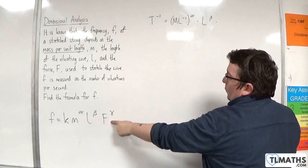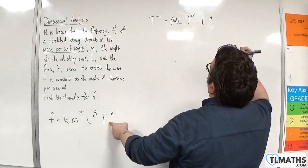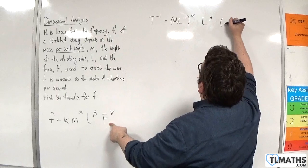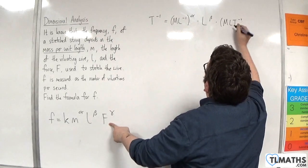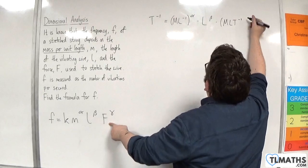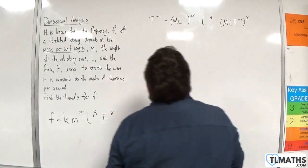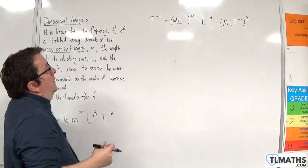Then we've got a force. Now a force is a mass times acceleration, so mass times acceleration, meters per second per second. Now that's to the gamma.